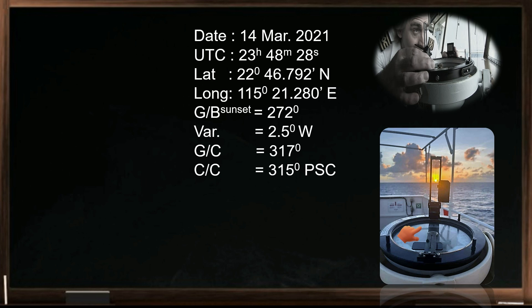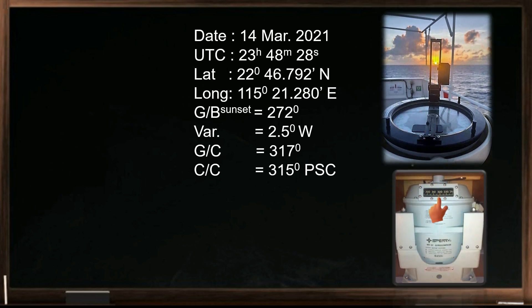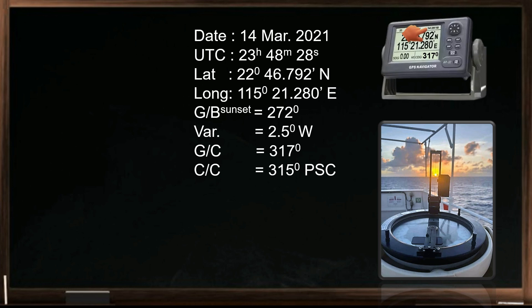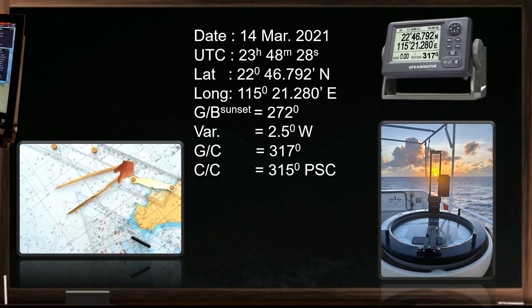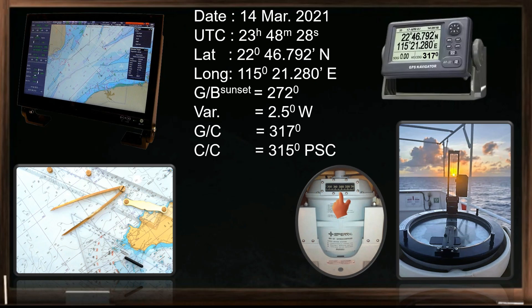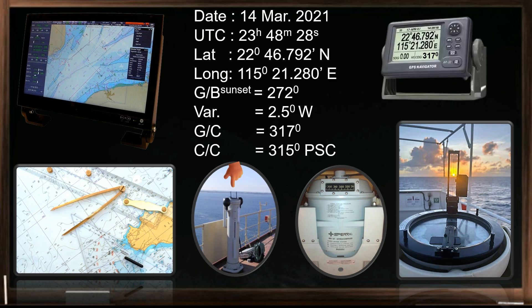Be sure that the gyro repeater being used is aligned with the master gyro compass. At the time of taking the sun's bearing during sunset, we should also note the universal time, the ship's position, the variation in the locality, the ship's present gyro course, and the compass course, with the present date and year. You can use the GPS receiver to determine the universal time of the observation, as well as the ship's position. Take the variation from the navigational chart or from the ECDIS. The gyro course should be taken from the master gyro compass, and the compass course will be taken from the ship's magnetic compass.